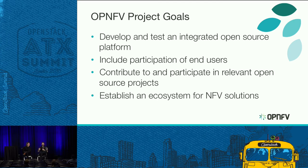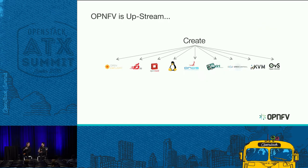You won't find 10,000 lines of code in OPNFV because that's not where we'll be writing code. If we want to make an OpenStack change, we go to OpenStack to do that. If we want to work in OpenDaylight, we go there. It's fun to try and articulate the value of OPNFV — people say, 'where's the code?' And it's like, well, it's in OpenStack, it's in OpenDaylight, it's in OVS.